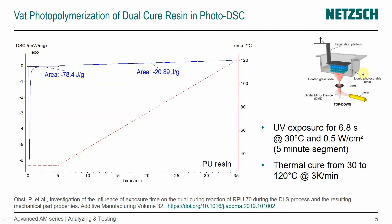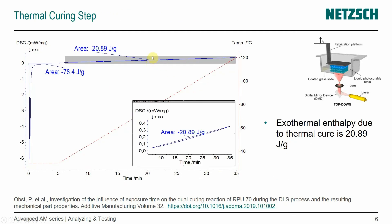And it's that top-down process that we have talked about. What do we see? The exothermal reaction is facing downward, so as the material is exposed to UV light, we see a first exothermal reaction that gives us an area under the peak, and then we have the thermal cure following. We can also see that there's a deviation from the baseline, and when we zoom into that area, you can really see the deviation, and the area under that curve is 20.89 J per gram.